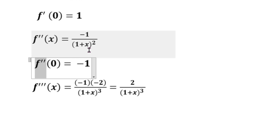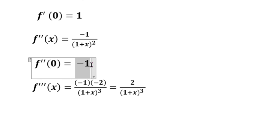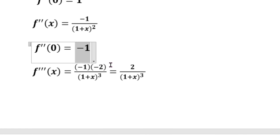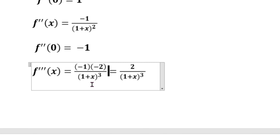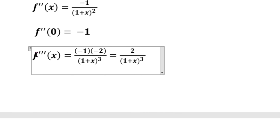The denominator in this case is 1 plus 0 whole squared, which equals 1. So the numerator value gives the answer as minus 1. Next, we find f double dash of x, the second derivative.